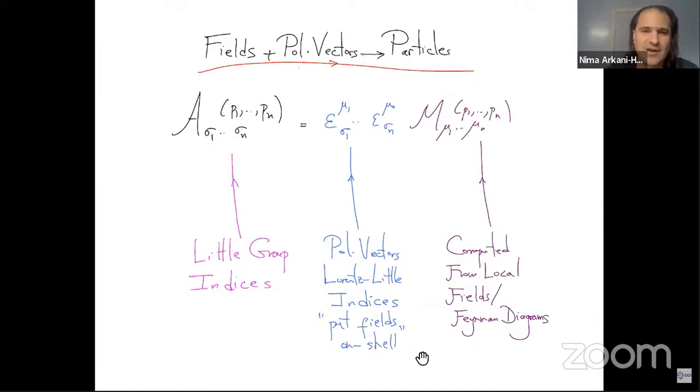life gets a little bit more interesting because the amplitude itself only has little group indices. The amplitude does not transform like a Lorentz tensor. If you do a Lorentz transformation on the momenta, you have to pick up a little group transformation on the little group indices.